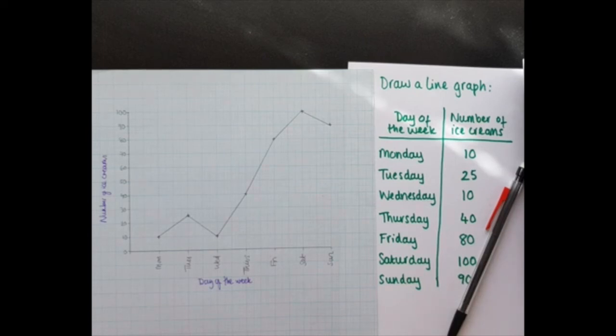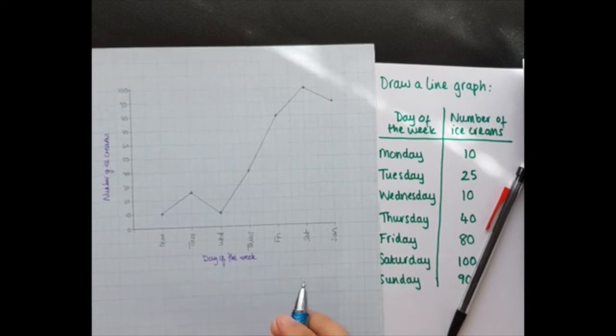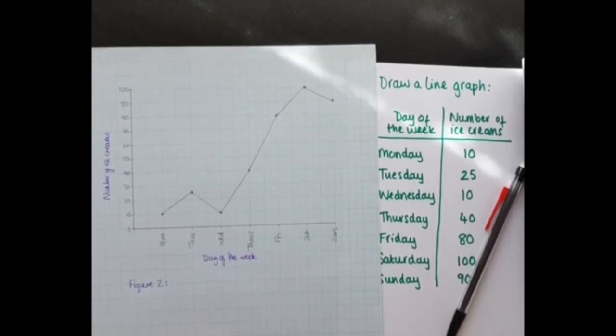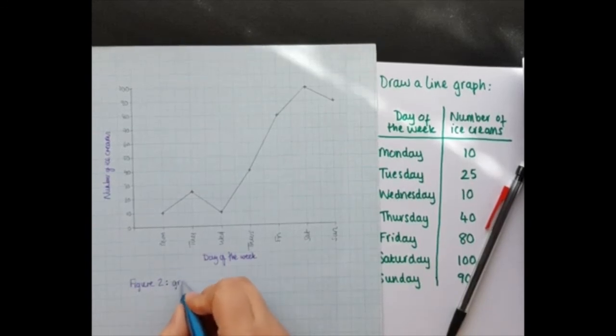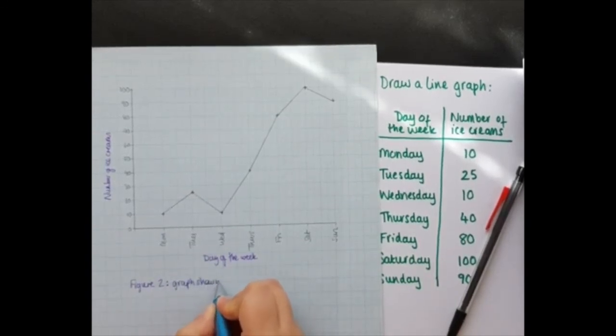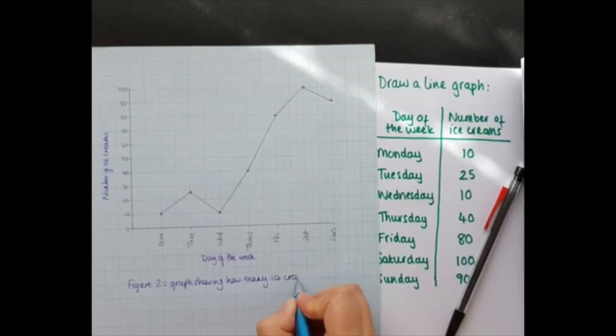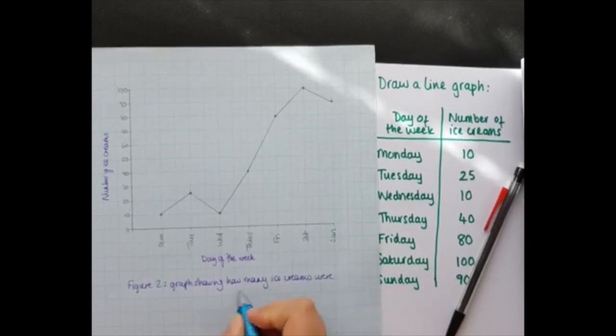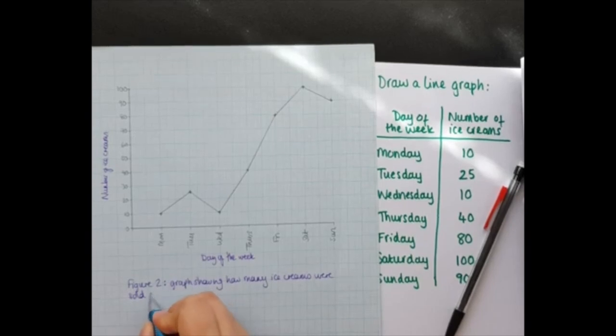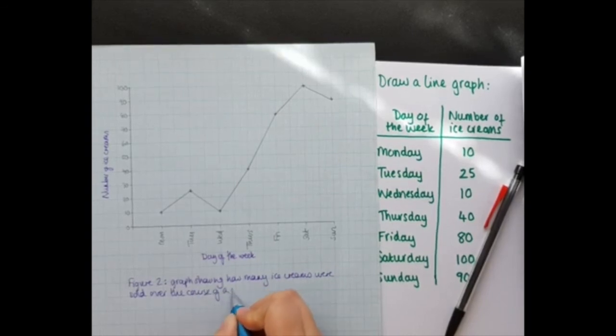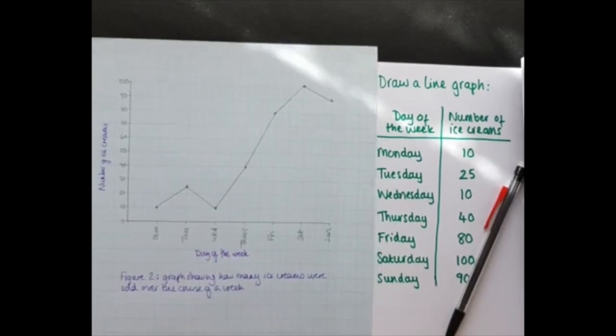So captions are done underneath the graph and we say figure and then we give it a number. So this might be figure two. And then we say what this figure, this graph shows. So it is a graph showing how many ice creams were sold over the course of a week. So we don't have to get too technical. And there we go. And then there is our line graph.